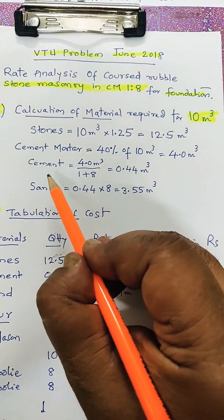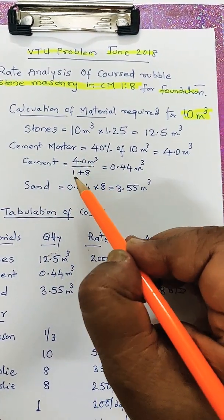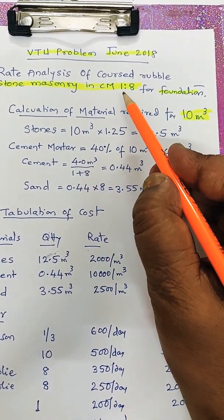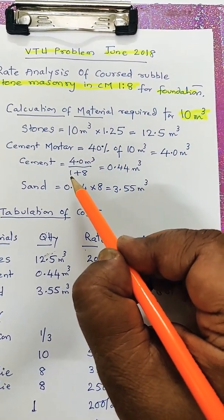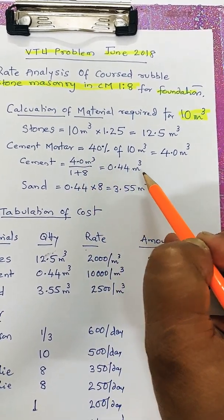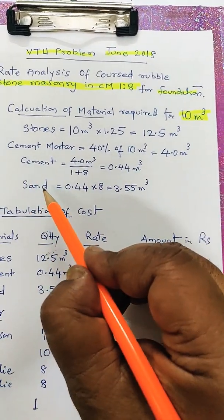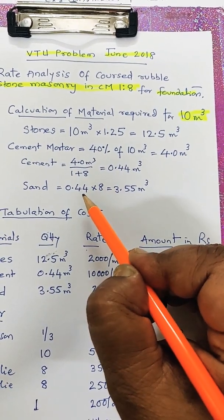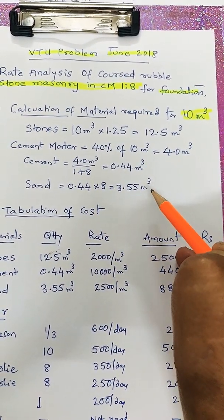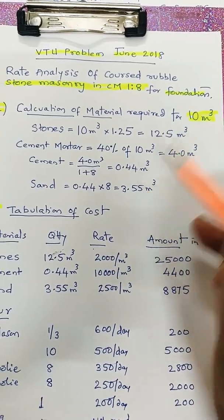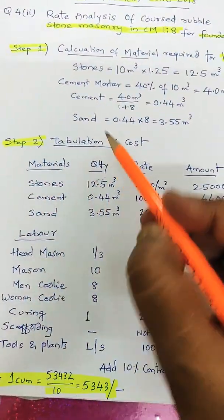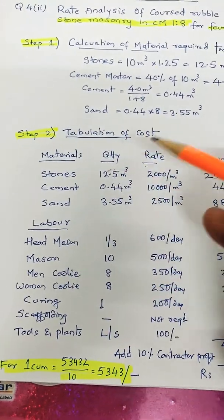Cement required: 4 m³ divided by the ratio 1:8, so dividing by (1+8) gives 0.44 m³. Sand is 8 times the cement, which is 3.55 m³. So these three — stones, cement, and sand — are the materials required. Step 2: tabulate the materials and labor required.